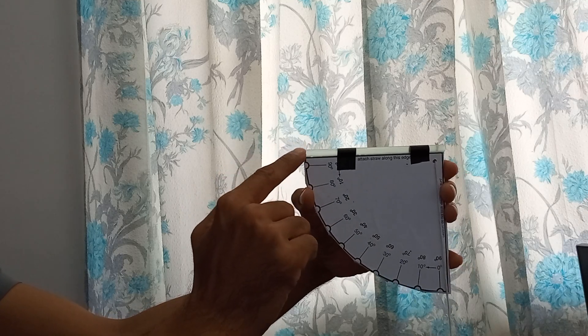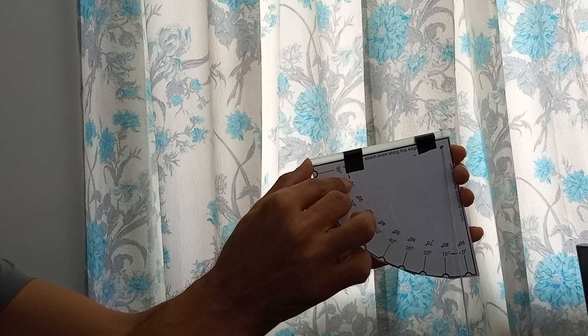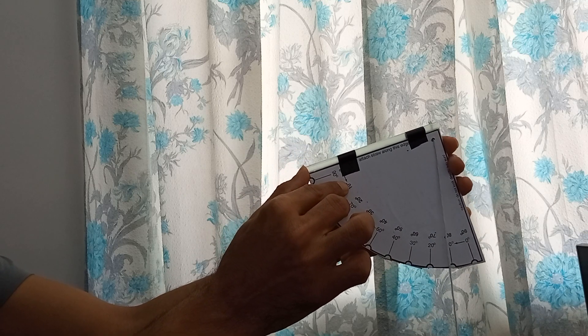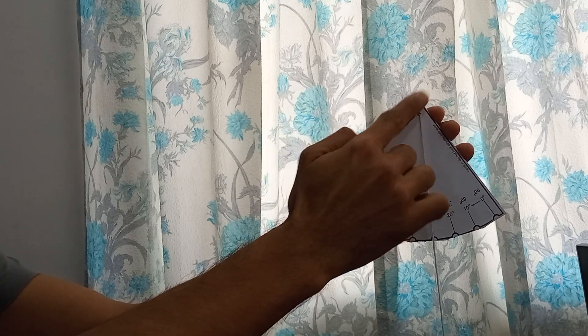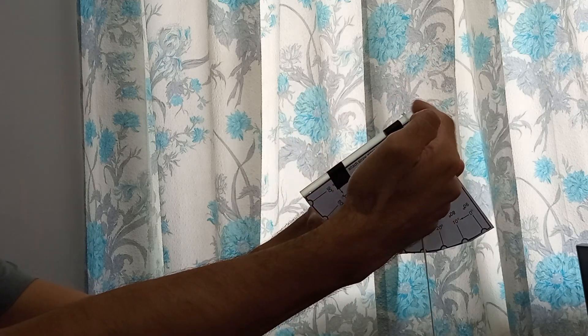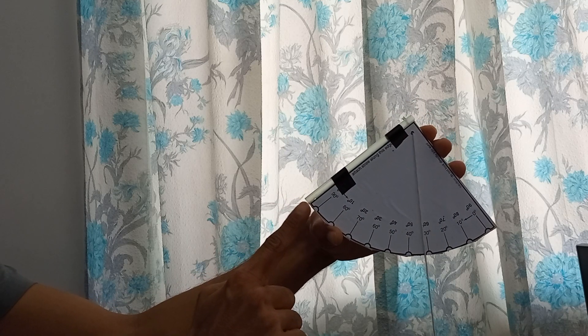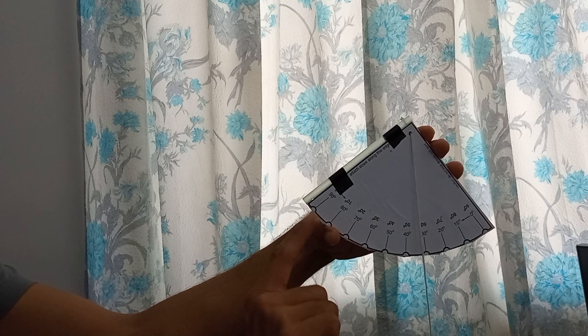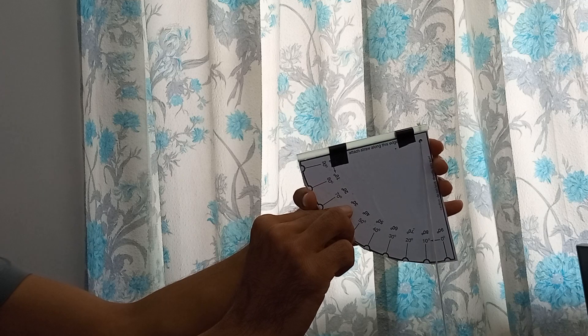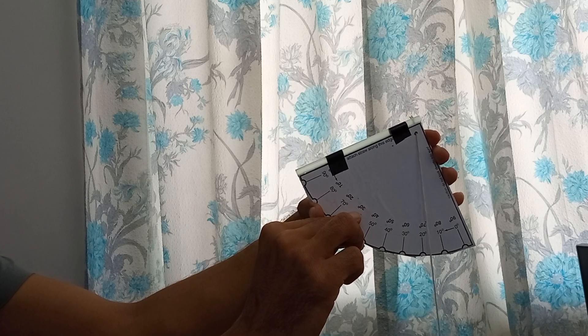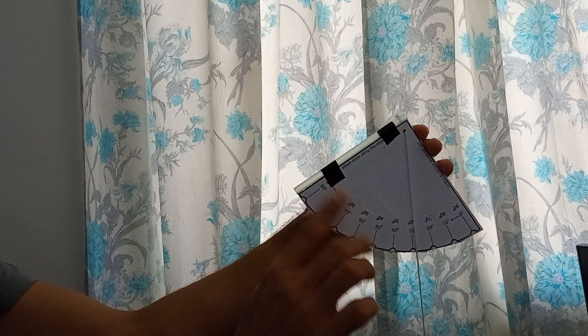You have to tilt it in a way such that the object you're trying to look at in the night sky, you can see through the straw. Light from the star will come in here and pass through and you'll be able to see it from here. This is where your eyes are. As you start tilting it and as soon as you are able to see the star through the straw, you stop.